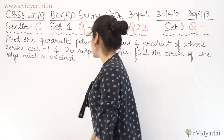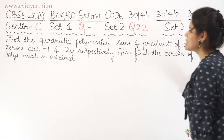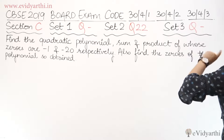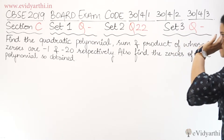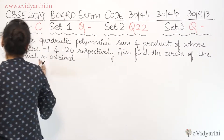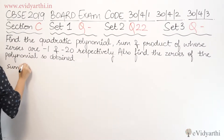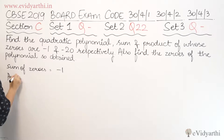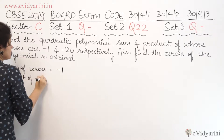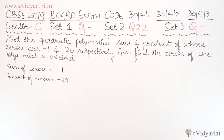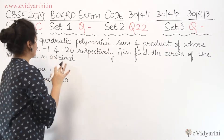Moving to question number 22 of set number 2. The question says: find the quadratic polynomial whose sum and product of zeros are minus 1 and minus 20 respectively, and also find the zeros of the polynomial. So here, what we have given is sum of zeros = minus 1, and product of zeros = minus 20. These two things are given, and we have to form the quadratic polynomial.